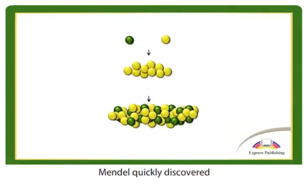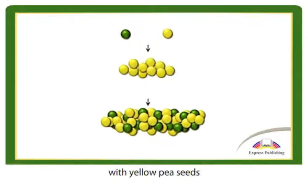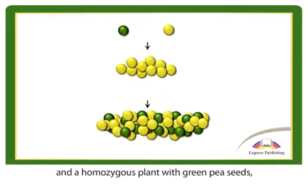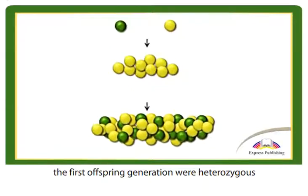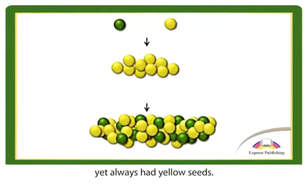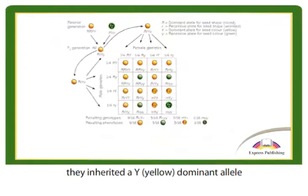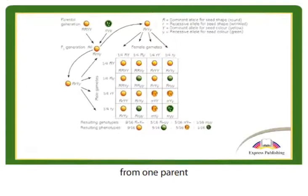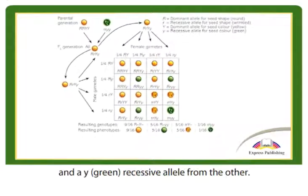Mendel discovered that by breeding a homozygous plant with yellow pea seeds and a homozygous plant with green pea seeds, the first offspring generation were heterozygous, yet always had yellow seeds. That is, they inherited a Y (yellow) dominant allele from one parent and a Y (green) recessive allele from the other.